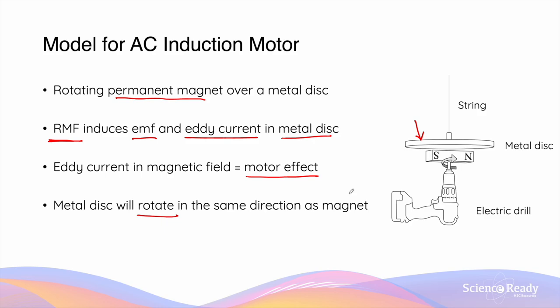When the rotational speed of the permanent magnet is increased by adjusting the electric drill setting, the rotational speed of the disc also increases.